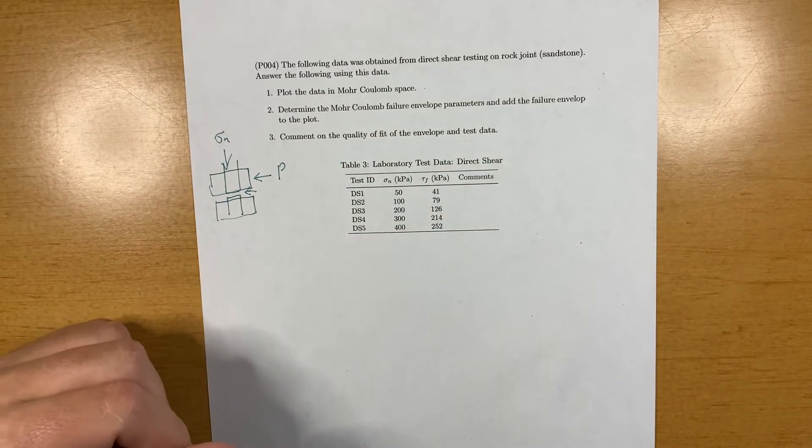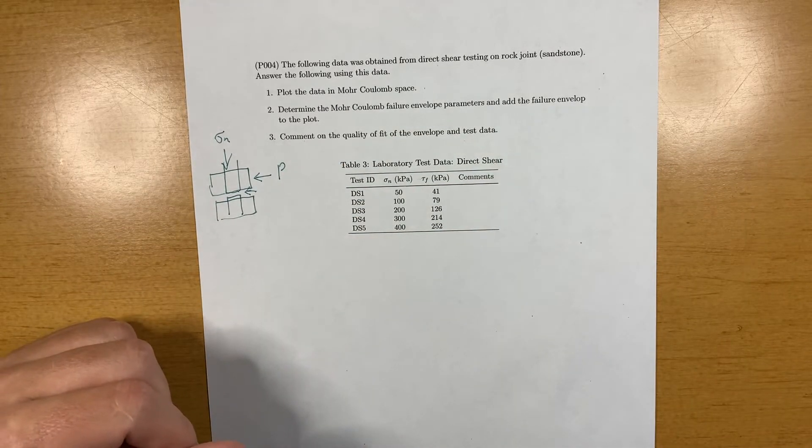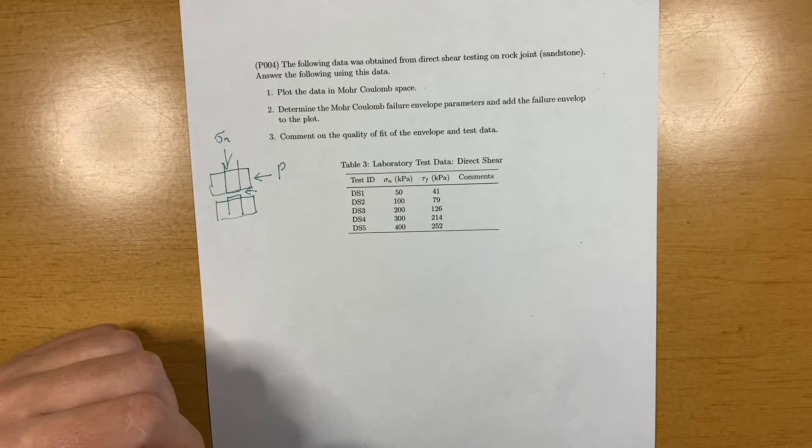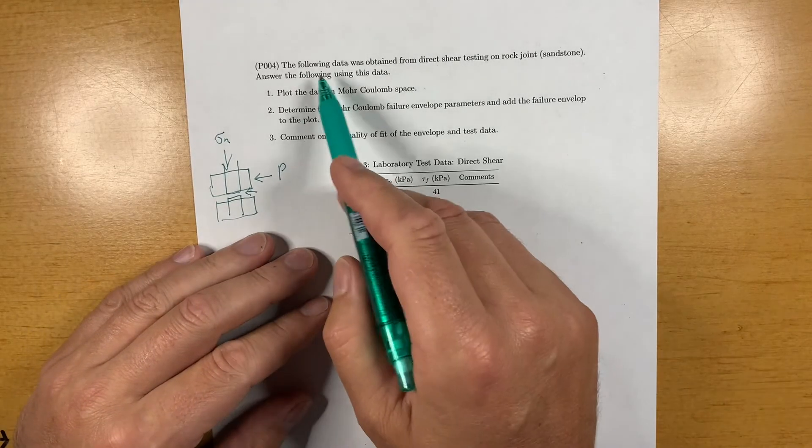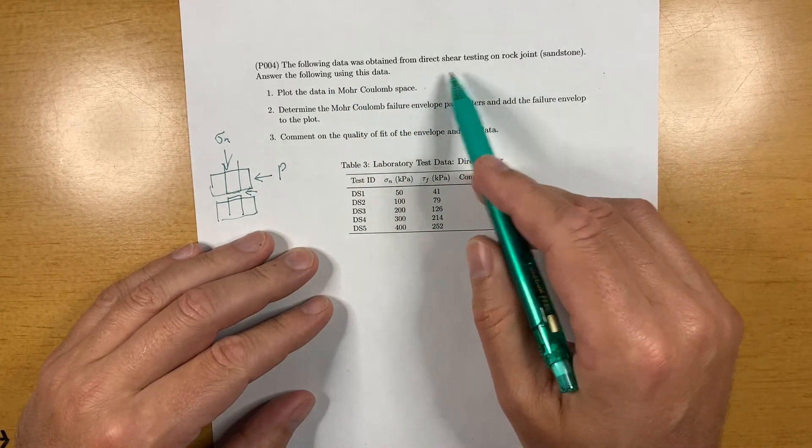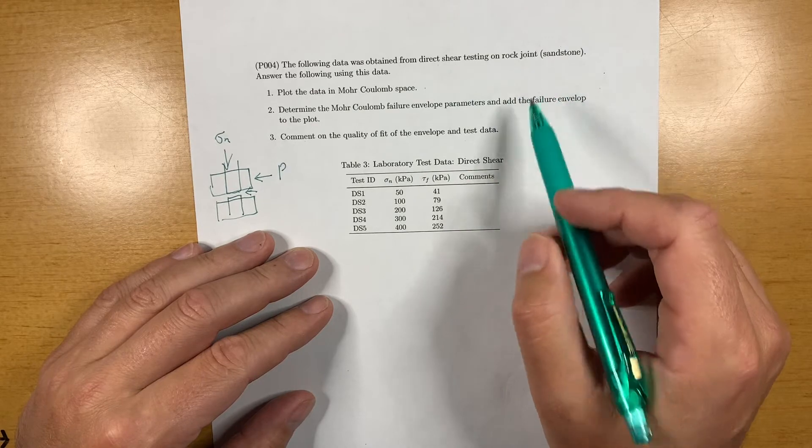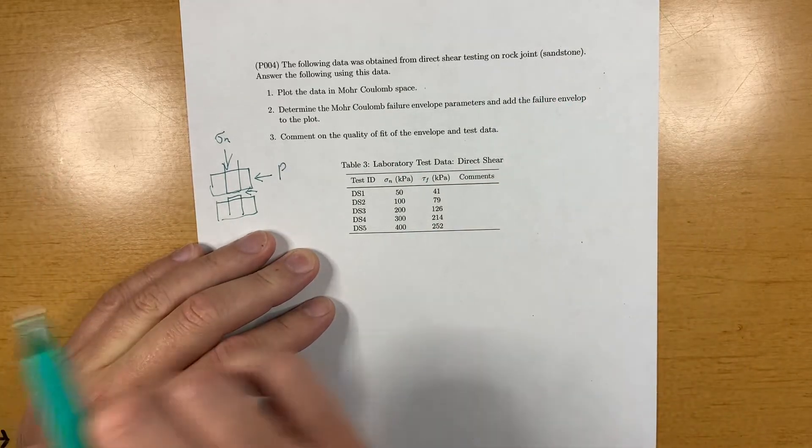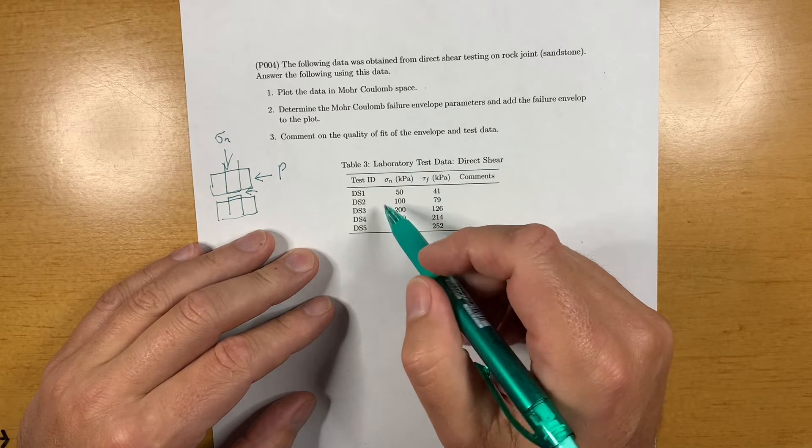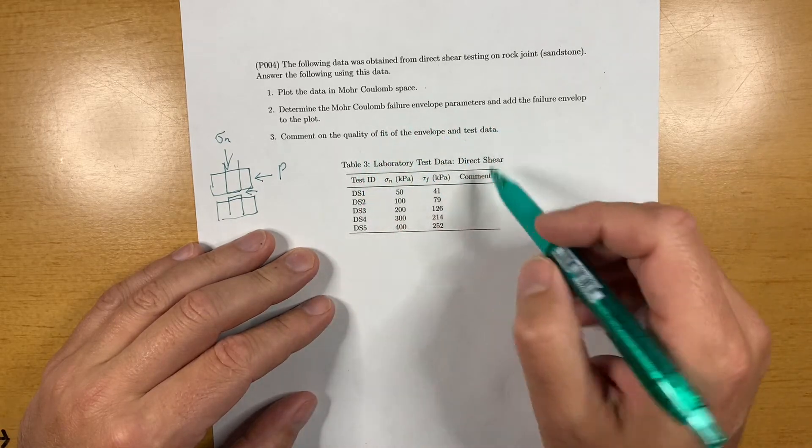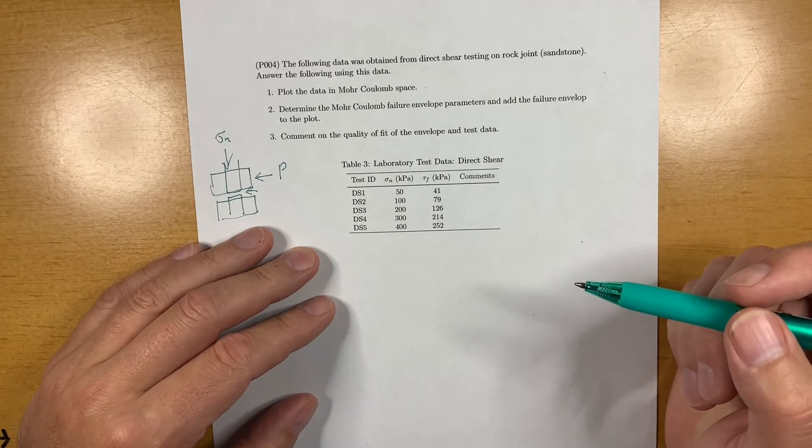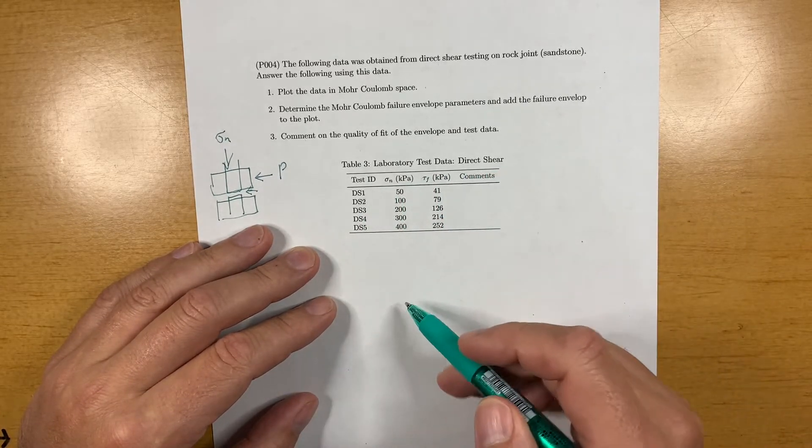And from that, you plot it up and you come up with a shear strength failure criteria. So the question here, it says that we have a rock joint in some wall of sandstone. It asks to plot the data in Mohr-Coulomb space, determine the failure envelope and the parameters and make some comments. So here's our data here.